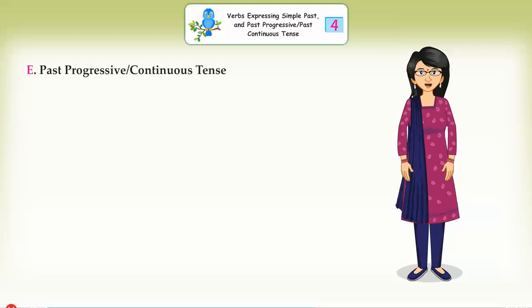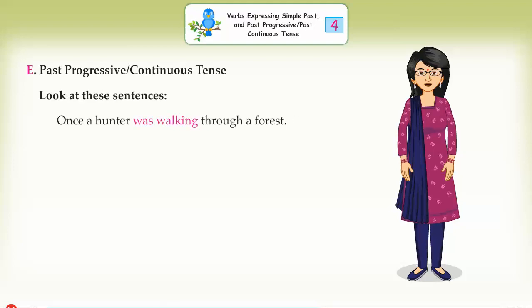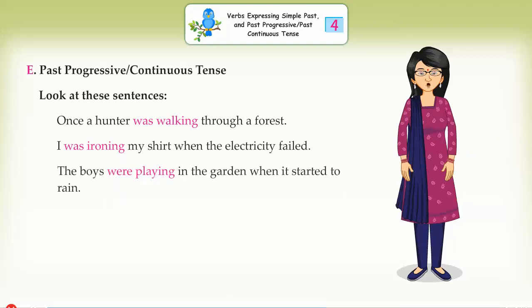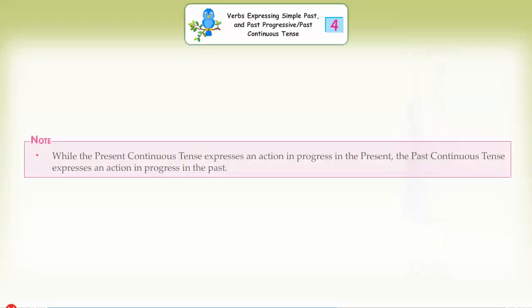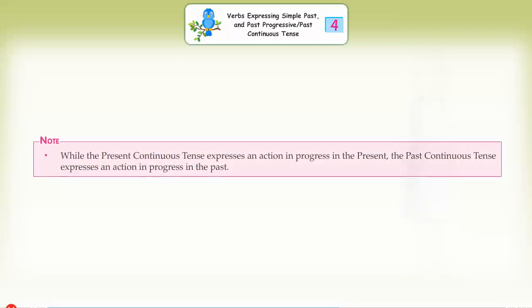Past progressive continuous tense. Look at these sentences: Once a hunter was walking through a forest. I was ironing my shirt when the electricity failed. The boys were playing in the garden when it started to rain. In each of these sentences, the verb is in the past progressive or past continuous tense. Note: while the present continuous tense expresses an action in progress in the present, the past continuous tense expresses an action in progress in the past.